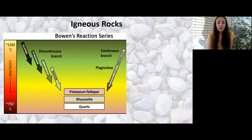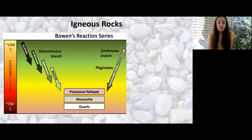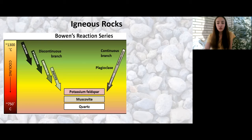If the magma cools even further, you get potassium feldspar, then muscovite, and finally quartz. There's another branch on the right side regarding the mineral feldspar — specifically whether you have calcium-rich or sodium-rich feldspar. Calcium-rich feldspar precipitates out at a higher temperature, and as the magma cools further, sodium-rich feldspar precipitates out. The very last three minerals are always potassium feldspar, muscovite, and quartz. Since quartz is silica, the silica content is increasing down this series, and you get more feldspar as you go further down.